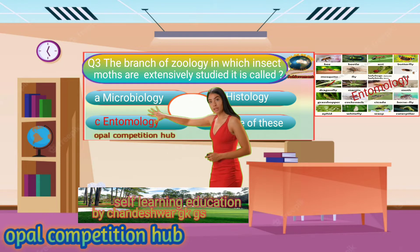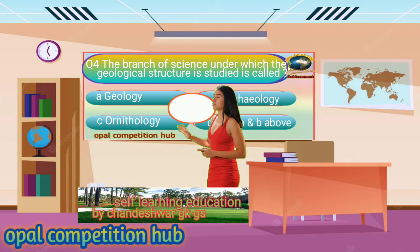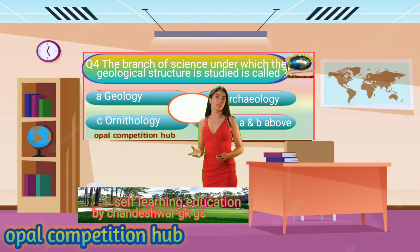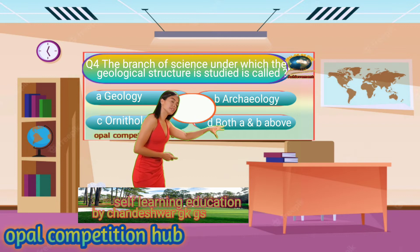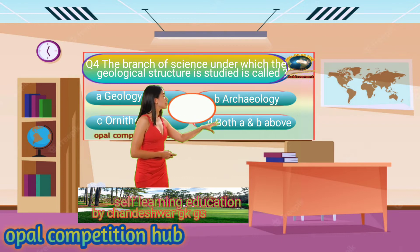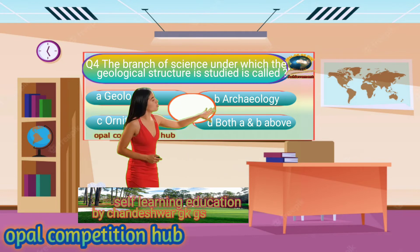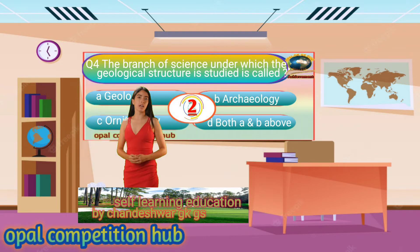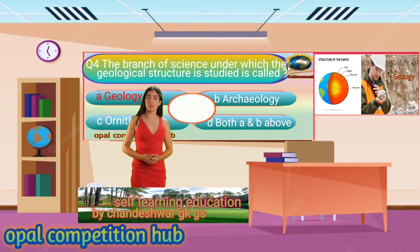Question number 4. The branch of science under which the geological structure is studied is called. Your options are: Option A. Geology, Option B. Archaeology, Option C. Ornithology, Option D. Both A and B above. Your time starts now. Your answer will be Option A. Geology.